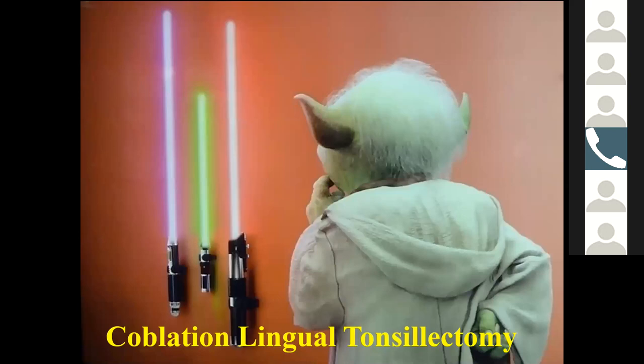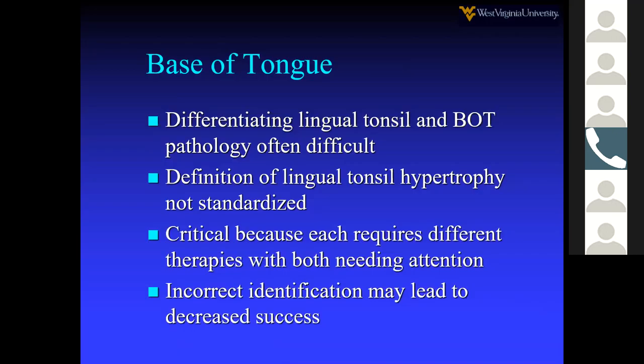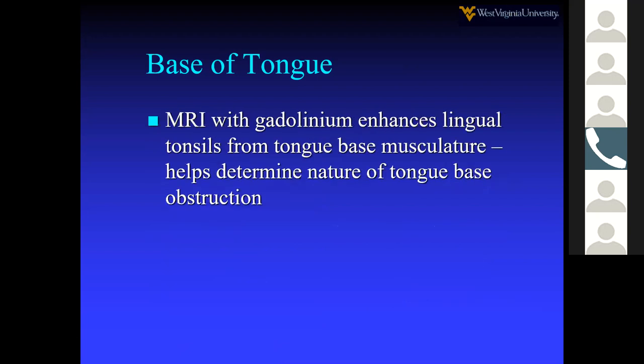Regarding lingual tonsils: use a coblation wand. It can be difficult to differentiate lingual tonsil from base of tongue, and the definition of lingual tonsil hypertrophy is not standardized. This distinction is critical because different procedures are used for each. Failing to correctly identify the structure can lead to decreased surgical success, as Tucker Woodson has noted.